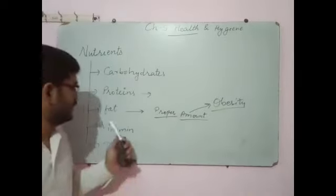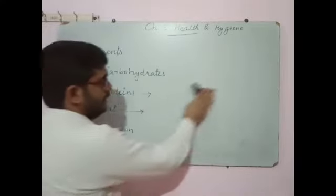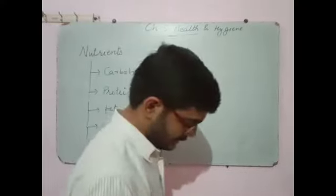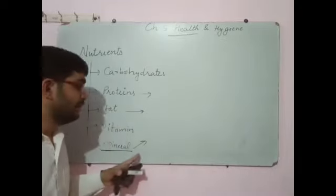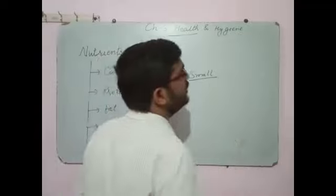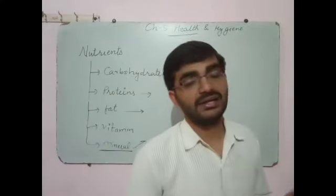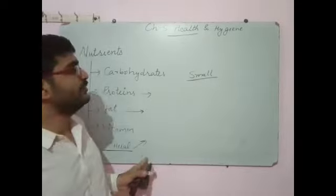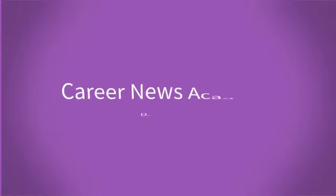Next is vitamins and minerals. First we will discuss the minerals. Minerals are the essential nutrients that are required for our body such as calcium, iron, magnesium. These are the essential nutrients which are required in small amount. This type of food contains the proper amount of minerals also, so we should take it in proper amount.